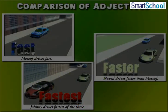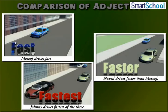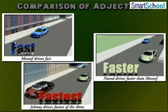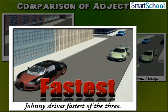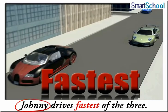Also, when we say Johnny drives fastest of the three, we compare the driving speed of the three drivers — Musouf, Naveed, and Johnny — and we say that Johnny drives fastest of the three. Look carefully at the word fastest. The word fastest is used to compare the speed of Johnny with Naveed and Musouf.